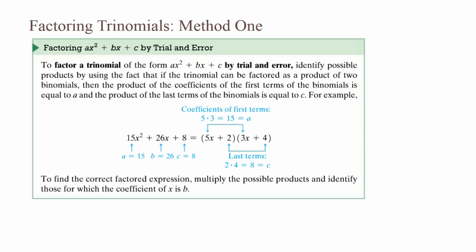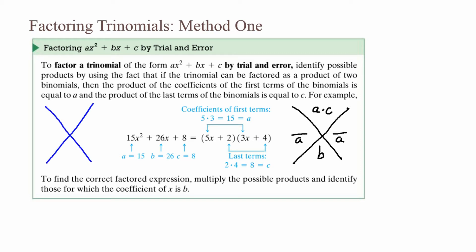One option for trial and error is called the big X. Draw a large X — it gives four parts. For the top part, use a times c. For the bottom part, use b. The sides are divided by a. Then look for two factors that multiply to be a times c but add to be b. For 15x² plus 26x plus 8, the top is 15 times 8, which is 120, and the bottom is b, which is 26.